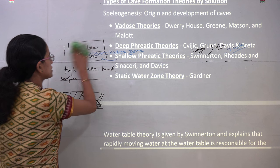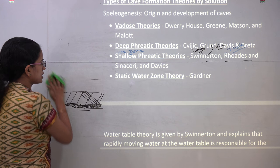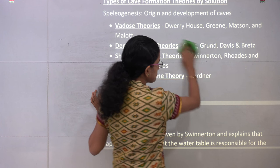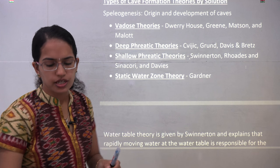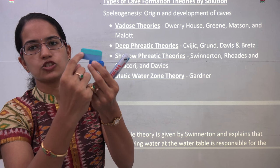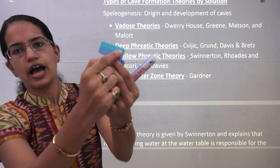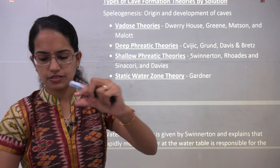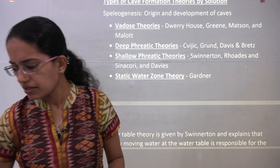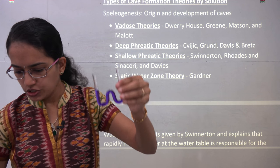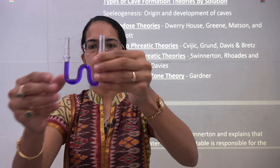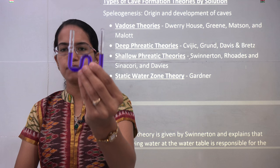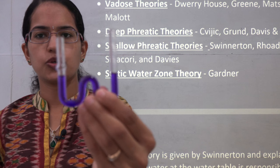The next is the shallow phreatic theory — very interesting and very conceptual. The groundwater runs above the water table at the fastest rate. However, the shallow phreatic theory talks about a very narrow range of water table, between two blocks with a very small margin running between the two phases. I have a simple demonstration using a W-shaped tube filled with water at two levels, which will help you understand the process. Then we will move on to Swinnerton's theory.